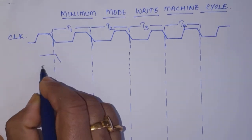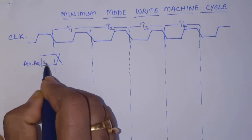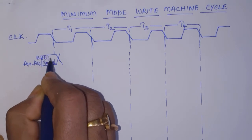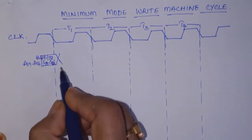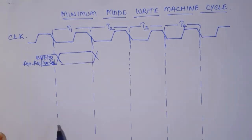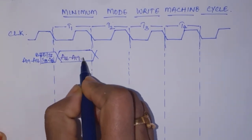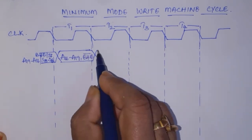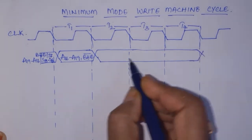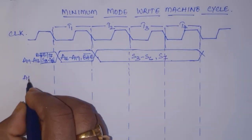First let us represent the high-order address and status multiplexed lines, that is A19 to A16, S3 to S7, S6, and BHE bar multiplexed with S7. In the first T-state, we have the high-order address: A16 to A19 and also BHE bar. For the rest of the three T-states, we have status lines S3 to S6 and also S7.